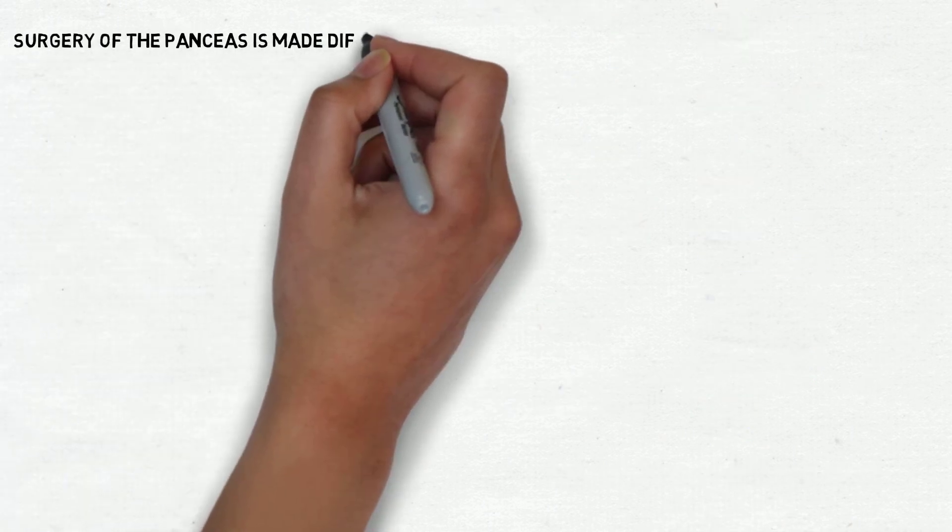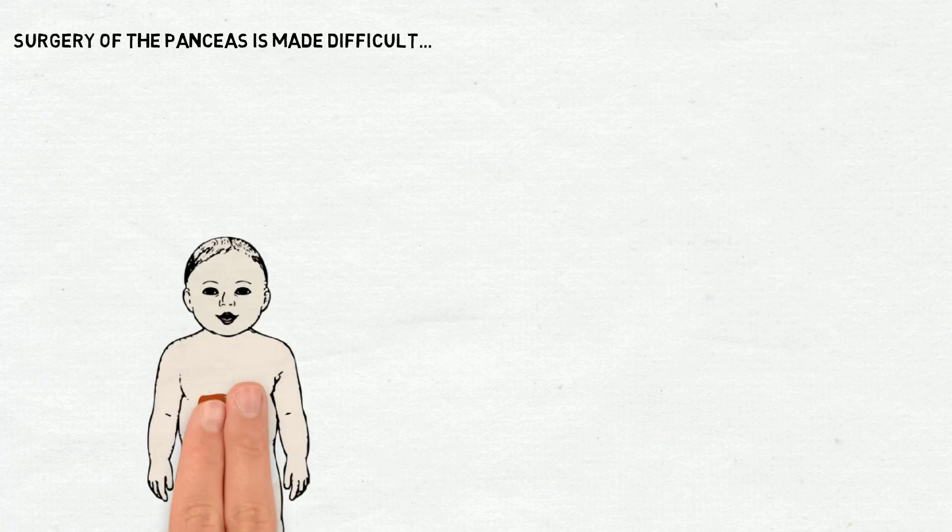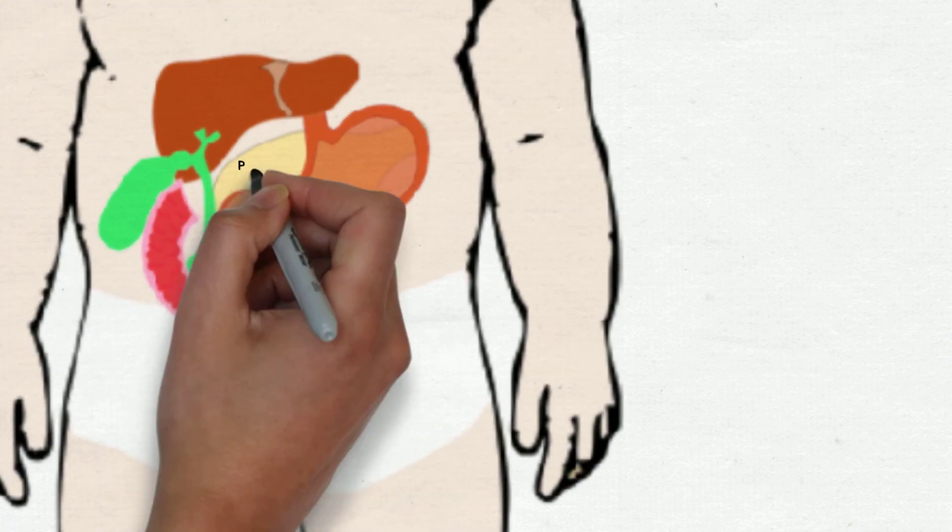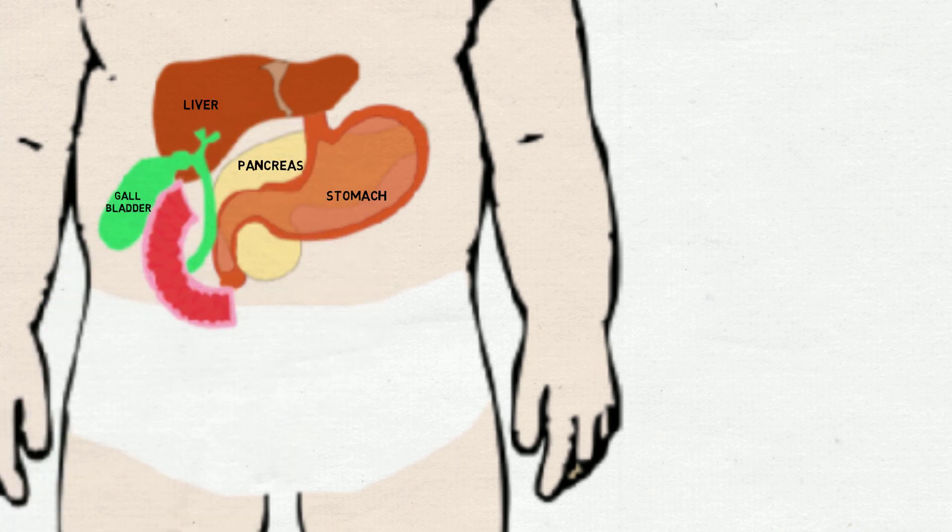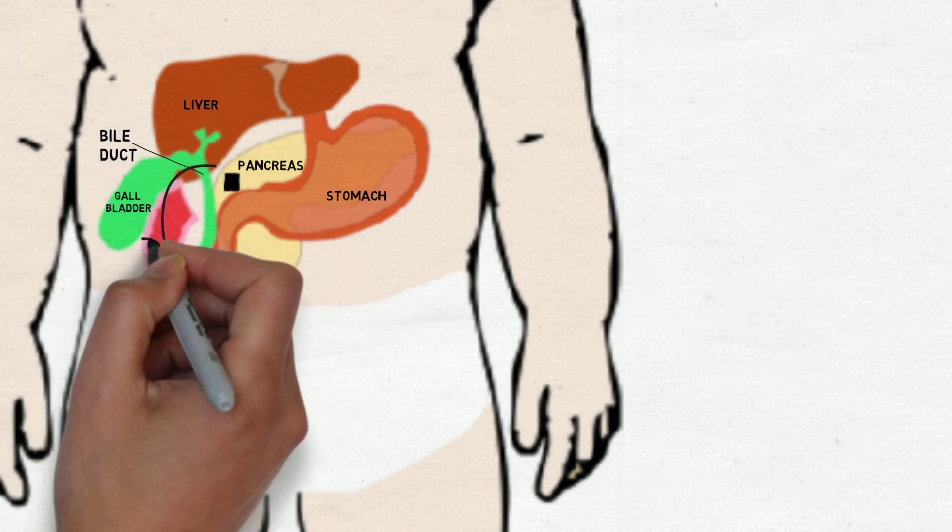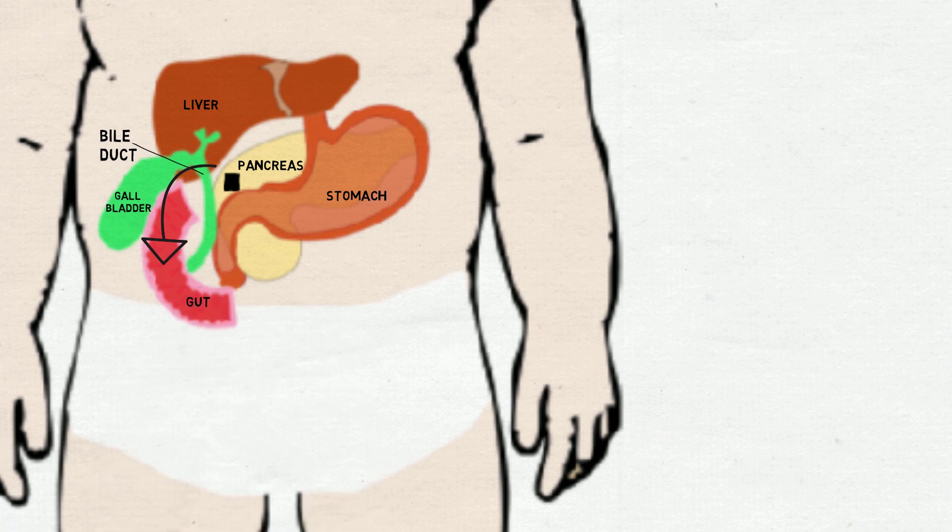Surgery of the pancreas is made difficult by its position in the body and by its proximity to other important structures. For example, in some patients with focal CHI, the focus is too close to the bile duct, which is a tube that drains digestive juices from the liver to the gut.